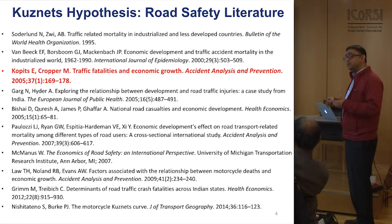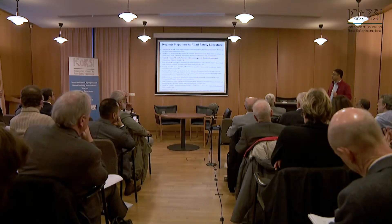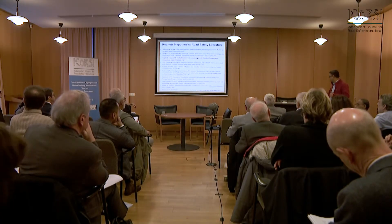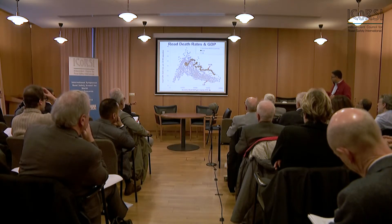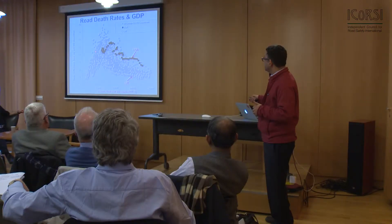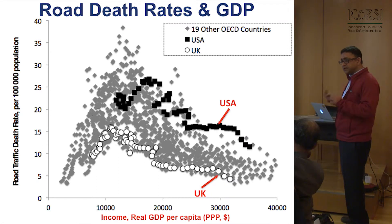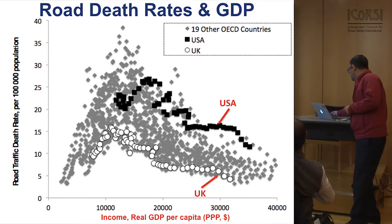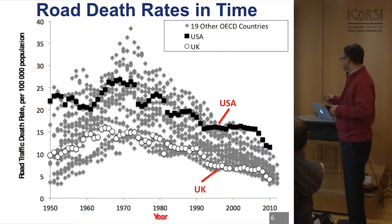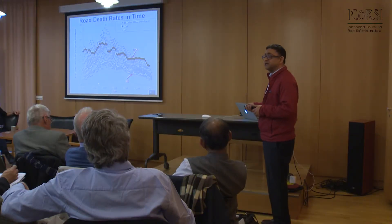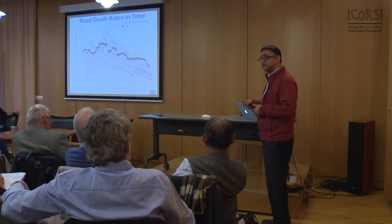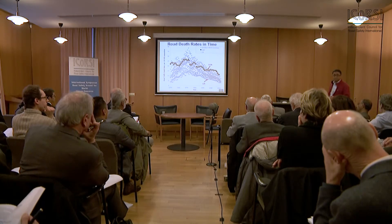I'm going to argue that something very important has been missed by developmental economists. Looking at the same graph, the US peaked at almost twice the income level as the UK — so it is certainly not true that there was a specific income threshold at which these two countries started addressing road safety. Yet when you look at time trends, the US and UK are almost synchronized: the peak happens at almost exactly the same time, as it does with all other countries in the background.